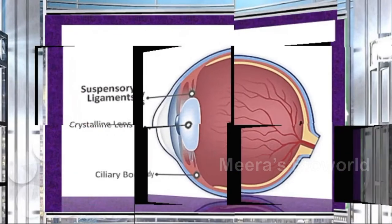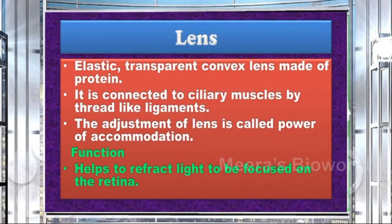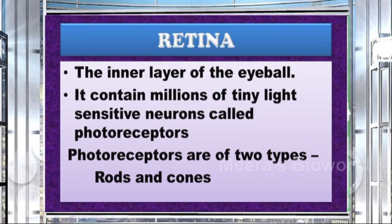The human eye lens is an elastic, transparent, convex lens made of protein. It is connected to the ciliary muscles by thread-like ligaments. The adjustment of the lens is called the power of accommodation. Its function is to refract light to be focused on the retina.